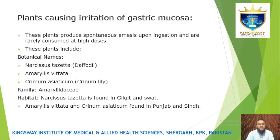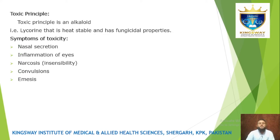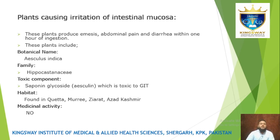Narcissus tazetta, Amaryllis vittata, and Crinum asiaticum are found in Punjab. The toxic principle is an alkaloid that is heat-stable and has fungicidal properties. Symptoms of toxicity include nasal secretions, inflammation of the eyes, narcosis, and convulsions or emesis.